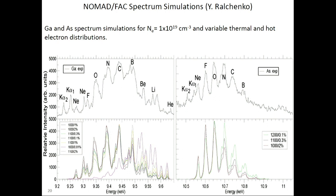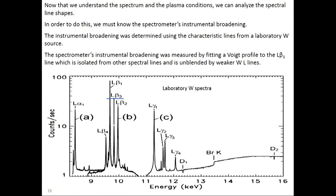Yuri Rauchinko used his code NOMAD to do very detailed calculations of the features from the lower charge states. Lithium-like and helium-like line intensities are fairly easy to calculate, but for the lower charge states the Cowan GF values show dozens or hundreds of spectral lines — much more difficult. Yuri has calculated these spectra for different thermal temperatures and different hot electron components, and we're in the process of matching those calculations to the experimental spectrum.